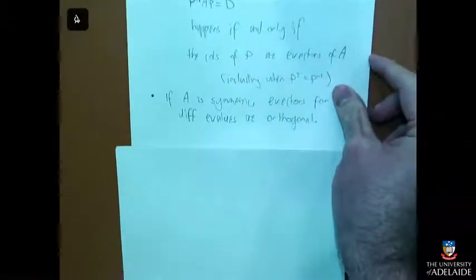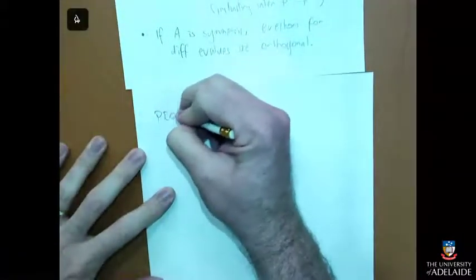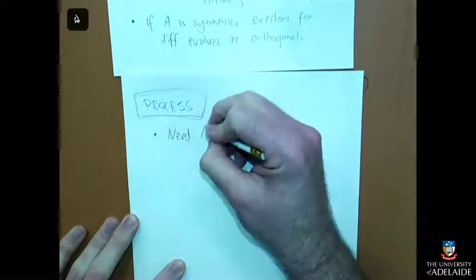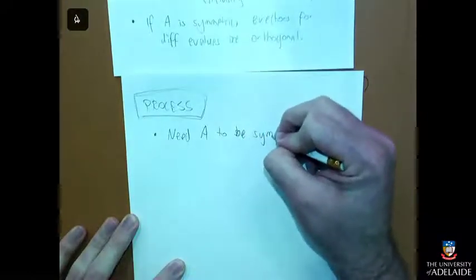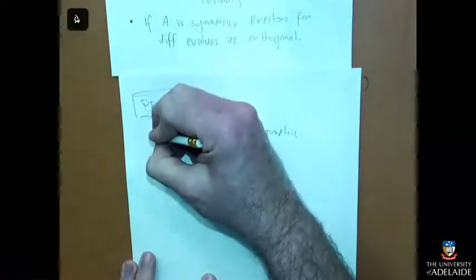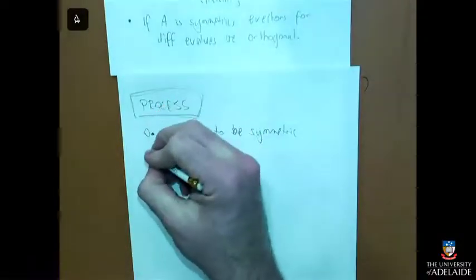Here's my process. Step zero: A needs to be symmetric. If it's not symmetric, give up — don't do this because it won't work. You can diagonalise it with normal diagonalisation, but you can't do orthogonal diagonalisation if it's not symmetric.